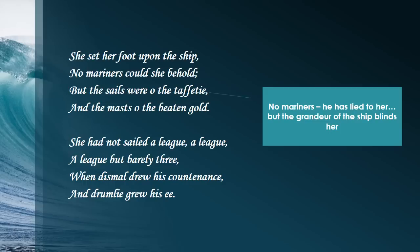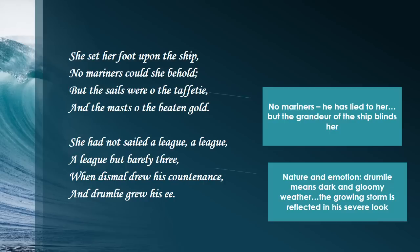What I want you to pay attention to right here is where it says, 'When dismal drew his countenance and drumly grew his eye.' Here we see something very common to Romantic literature: nature and emotions go together. Nature is a reflection of the emotion, and the emotion reflects nature. 'Drumly' means dark and gloomy weather — so it's like a storm brewing. He has a storm brewing inside him, and the growing storm is reflected in his severe look.